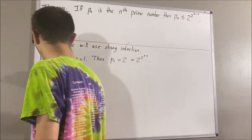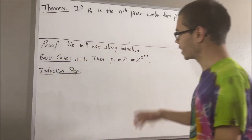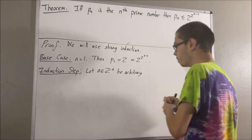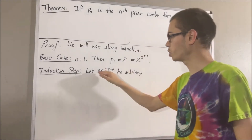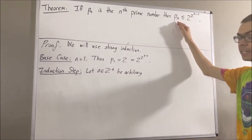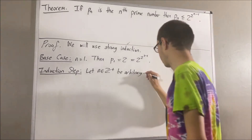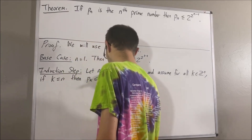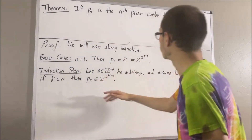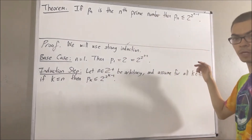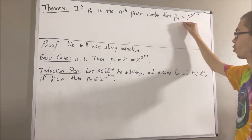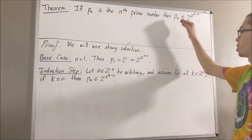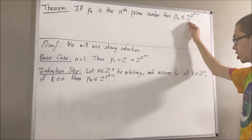Now let's move on to the induction step. In the induction step, we give ourselves an arbitrary positive integer n, and we assume for all positive integers k less than or equal to n, we have that Pk is less than or equal to 2 to the power of 2 to the k minus 1. The goal of the induction step is to show that this is also true for n plus 1 — that is, Pn+1 is less than or equal to 2 to the power of 2 to the n plus 1 minus 1, or equivalently, 2 to the power of 2 to the n.